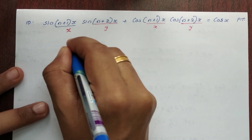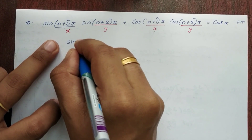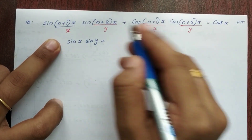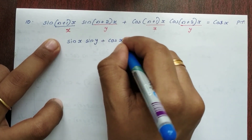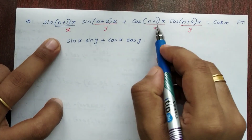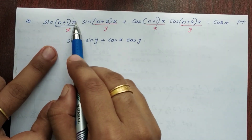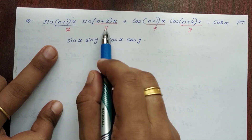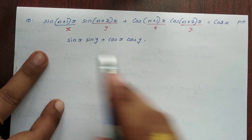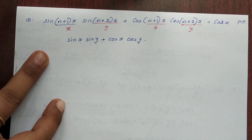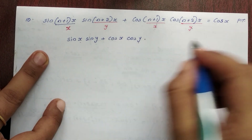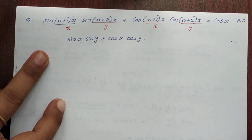Then we will try: sin x · sin y + cos x · cos y. Using the formula we have learned, this is cos(x+y) or cos(x-y). What we have learned earlier is: cos x · cos y + sin x · sin y.